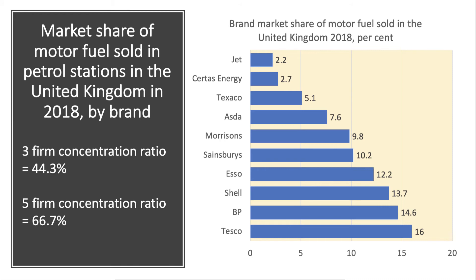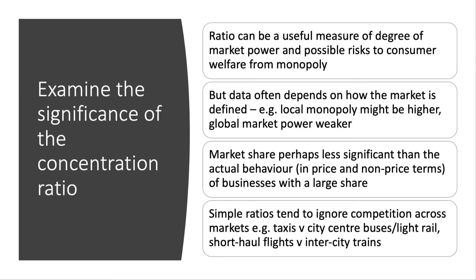The three-firm concentration ratio — taking the top three firms, Shell, BP, and Tesco — comes to 44.3 percent. The five-firm concentration ratio goes up to 66.7 percent, so again that is sufficient to define this market as an oligopoly.